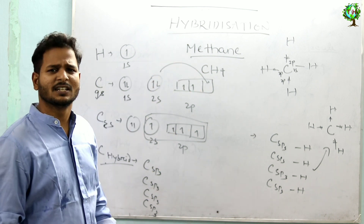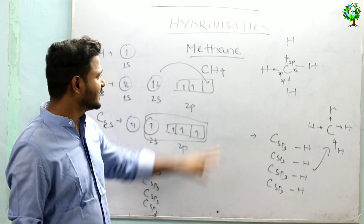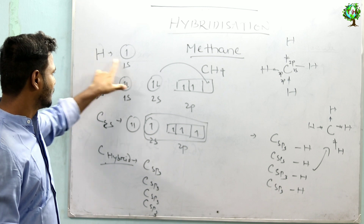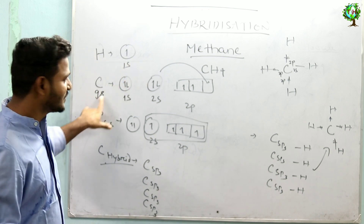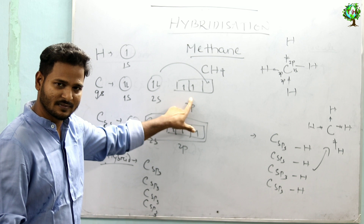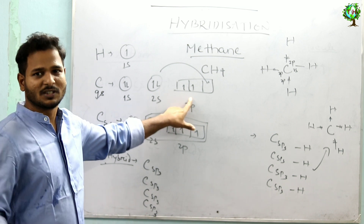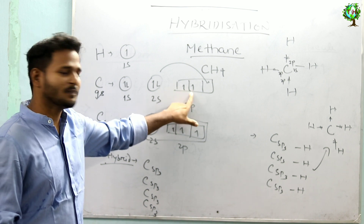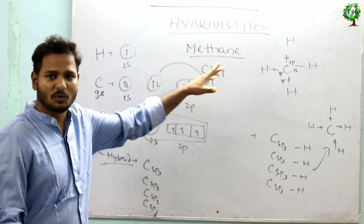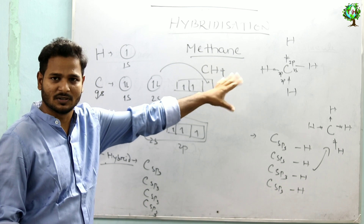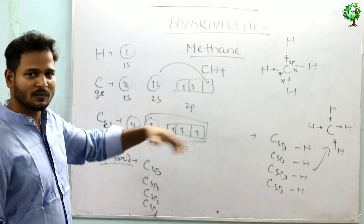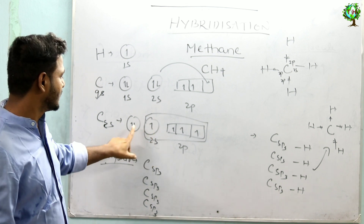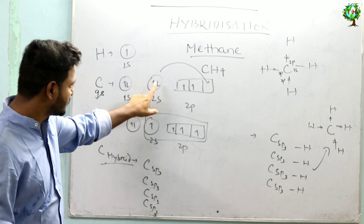Hybridization. Firstly, you can take a simple molecule called methane, CH4. The electronic configuration: hydrogen is 1s1; carbon in the ground state is 1s2, 2s2, 2p2. So according to valence bond theory, those having unpaired electrons are participating in bonding, but here there are only two unpaired electrons. But we can make four C-H bonds. So you can promote an electron by gaining energy — the electron is excited to a higher energy level — and that is always from 2s, not from 1s.